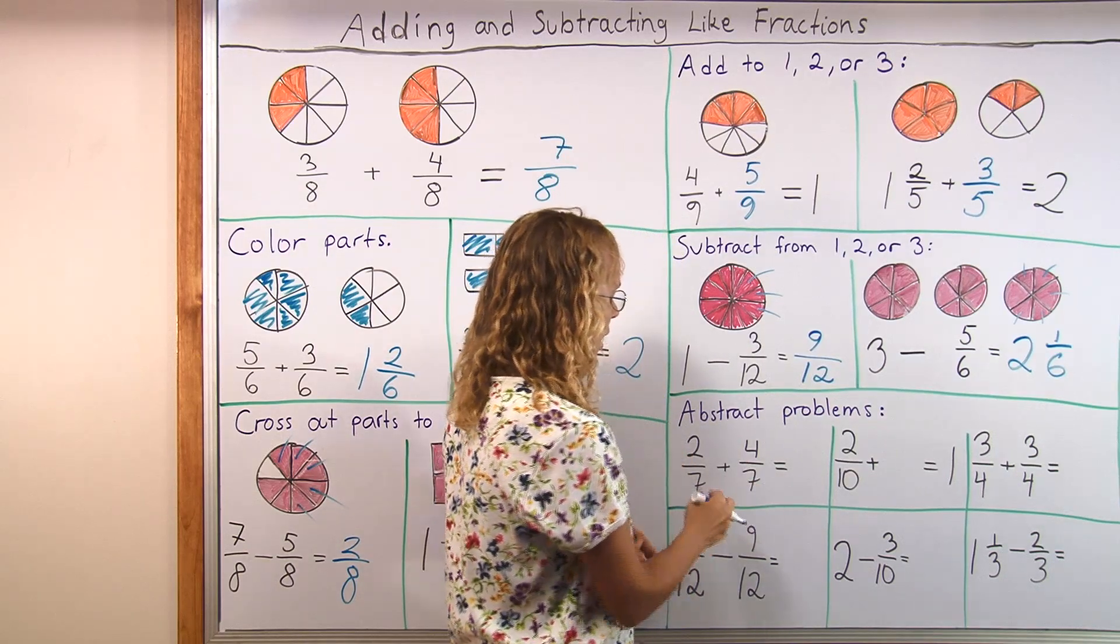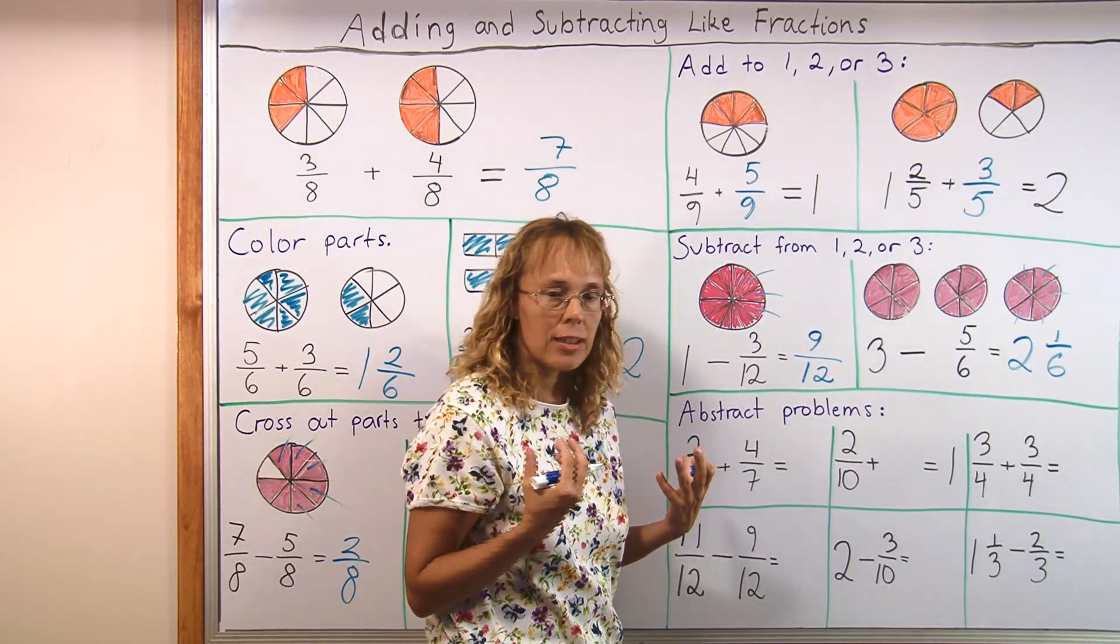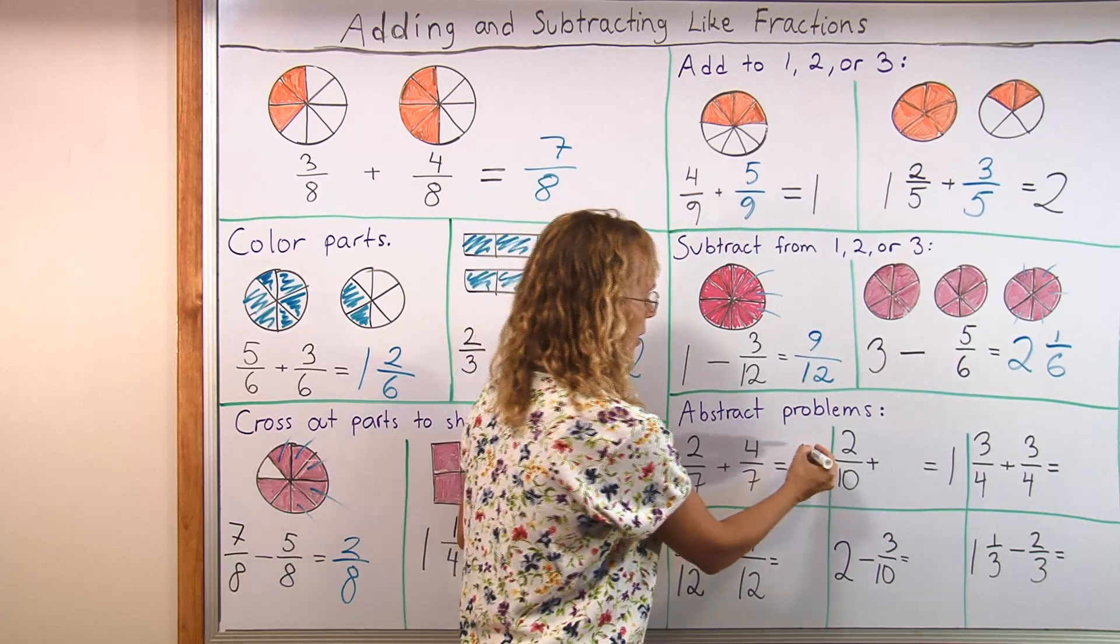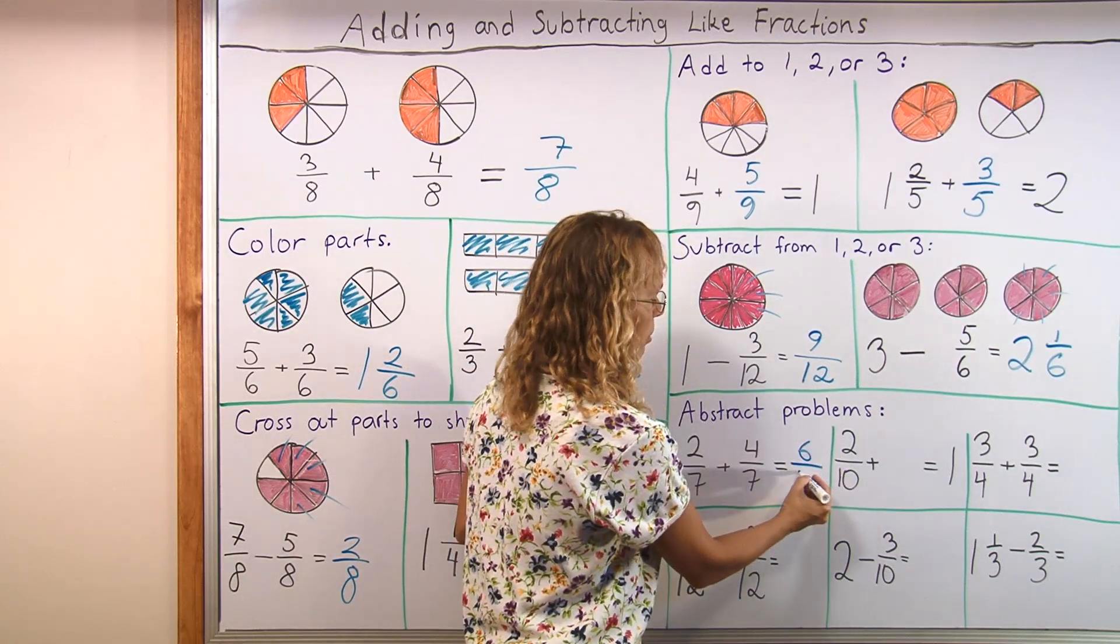2 sevenths and 4 sevenths. Okay, think that they are same kind of parts. So 2 slices and 4 slices, 6 slices and they are still going to be 7.